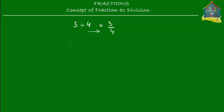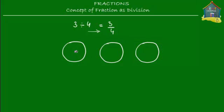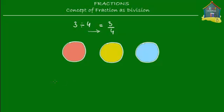Let's take 3 of something — let's say we have 3 pizzas, 3 identical pizzas. So 1 pizza, 2 pizzas and 3 pizzas. Just for the sake of differentiating among them, I'm going to color them in different colors. So I've got 3 pizzas: a red one, a yellow one and a blue one. And what I'm going to do with these 3 pizzas is share them equally among 4 friends — this number 4 over here.